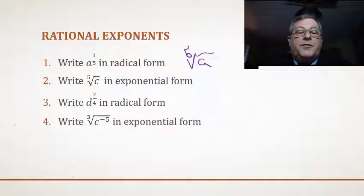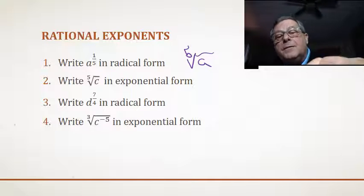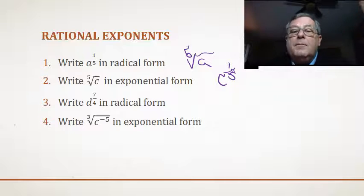Number two, write the fifth root of c in exponential form. Well, this is just simply going to be c raised to the power of 1 over 5. Taking it from radical form to exponential form.